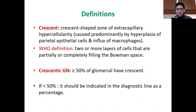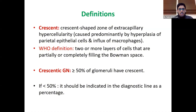Starting with some definitions: a crescent is a crescent-shaped zone of extra-capillary hypercellularity caused primarily by hyperplasia of parietal epithelial cells and influx of macrophages. Based on the WHO definition, a crescent is defined as two or more layers of cells partially or completely filling Bowman's space. We use the term crescentic glomerulonephritis when 50% or more of the glomeruli are involved by crescent.